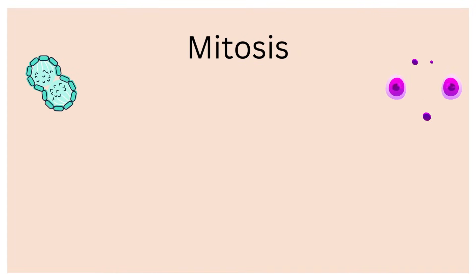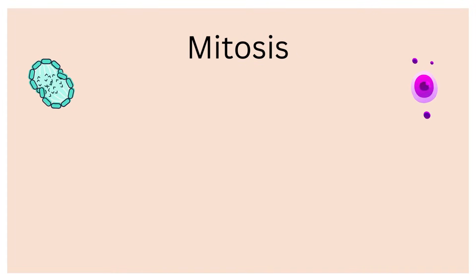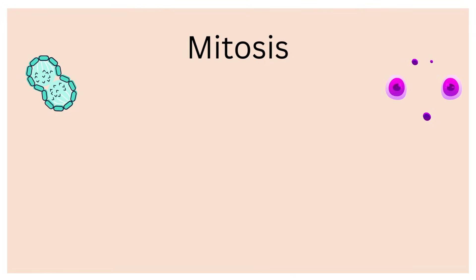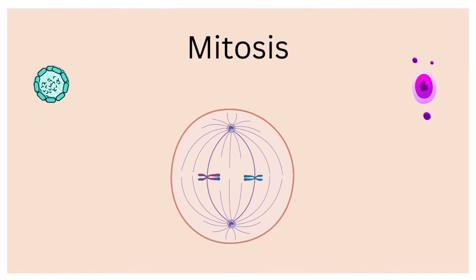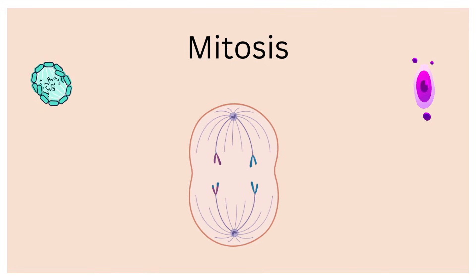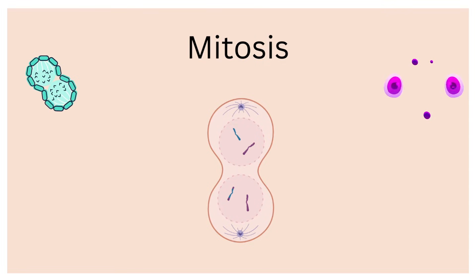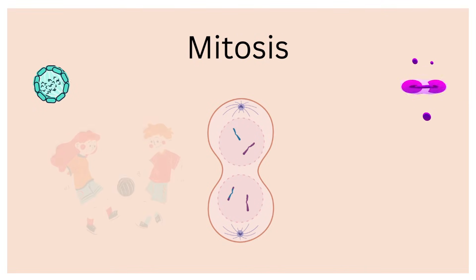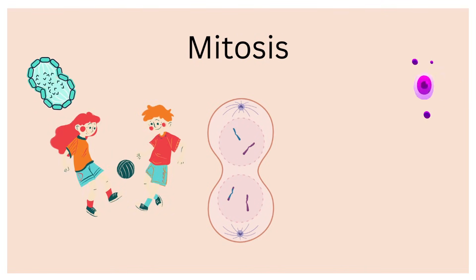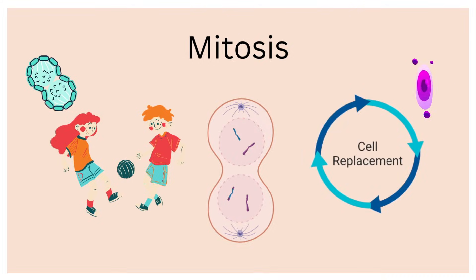Throughout our lives, our cells are dividing. Somatic cells do this through a process known as mitosis. Through this process, the DNA of the cell is condensed and arranged in a specific manner. DNA is moved to the opposite ends of the cell, and then the cell splits into two identical daughter cells. Mitosis is responsible for development and growth, cell replacement, and asexual reproduction.